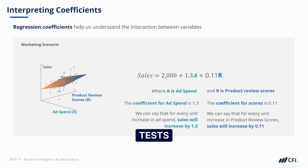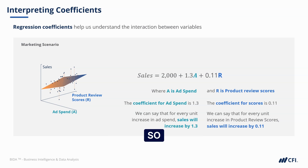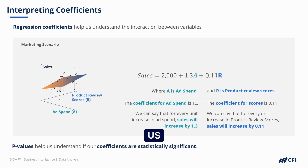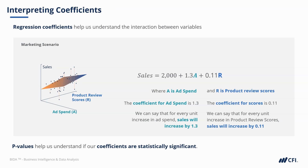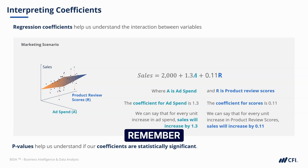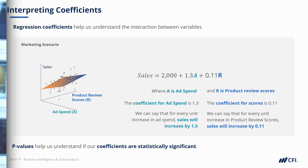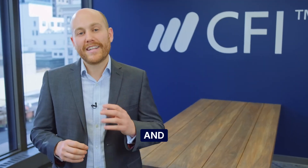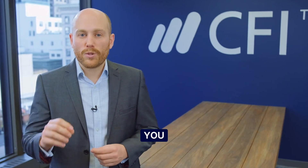There are various tests we can do to see how reliable our coefficients are and how much we can trust them to make predictions. The key point to remember is that p-values help us understand if our coefficients are statistically significant. We'll dive into examples in our regression course, but for now just remember that p-values are important. As well as short lessons and interactive exercises, we'll give you the chance to test your knowledge with an end-of-course quiz. Let's get started.